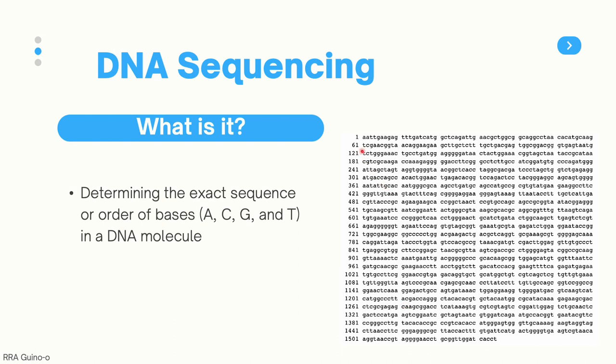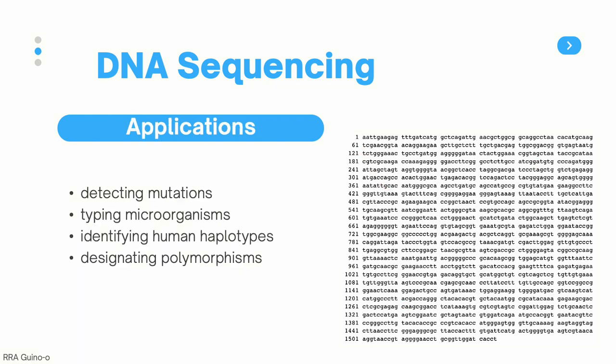We know this sequence because of DNA sequencing. So why do we need to know the sequence of DNA or certain genes? Here are just some applications. First, it can help us detect mutations in specific genes of interest.